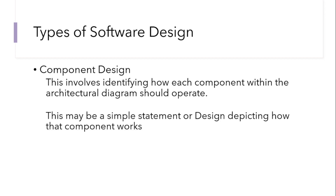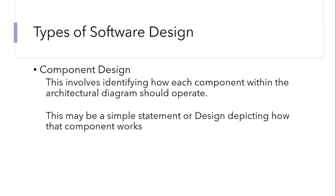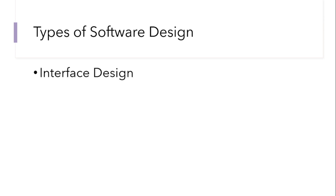The second type is component design. This involves identifying how each component within the architectural diagram should operate. It may be a simple statement or design depicting how the components work. For example, taking classroom management, we say it will keep track of various classrooms within the school. Another example: the fees management model will keep track of students' fees payments, generating fees receipts and generating student bill reports.